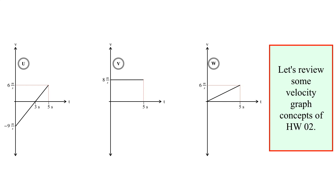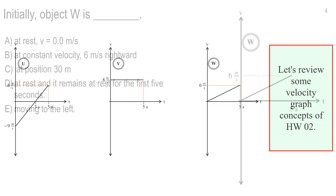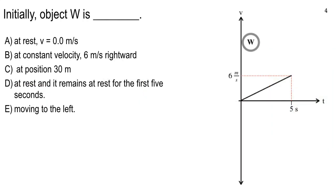Rusty, I am here. Okay, now we're recording. So this first question, the answer is v equals 0.0 meters per second. It's at rest.